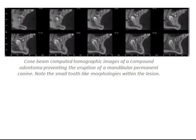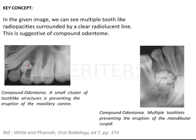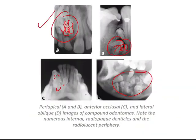A cone beam computed tomography image shows a compound odontoma preventing the eruption of the mandibular permanent canine. Key concept: in the given image we can see multiple tooth-like radiopacities surrounded by a clear radiolucent line, which is suggestive of compound odontoma. Another example shows a small cluster of tooth-like structures preventing eruption of the maxillary canine, and another shows multiple toothlets preventing eruption of the mandibular cuspid.